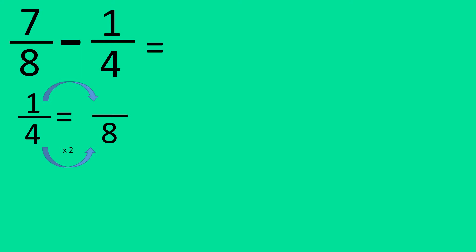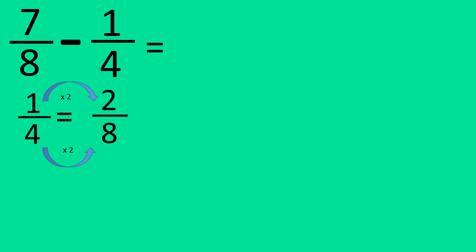So you're going to have to do the same to the top. When you do one times two, you get two. So let's write down this question again: seven over eight take away two over eight. The denominator will have to stay the same, and when you take two away from seven, you get five. That's our answer.